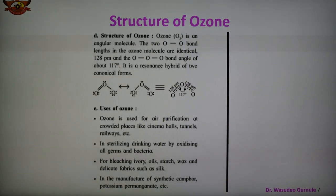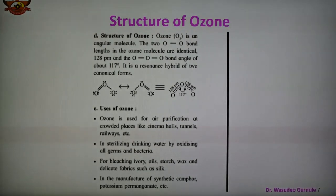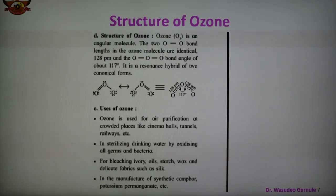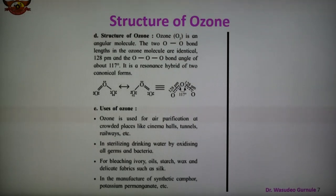The structure of ozone is a bent or angular structure. The uses of ozone include: air purification at crowded places like cinema halls and tunnels; sterilizing drinking water by oxidizing germs and bacteria; bleaching ivory, oil, starch, wax, and delicate fabrics such as silk; and in the manufacture of synthetic camphor and potassium permanganate. These are some important uses of ozone.